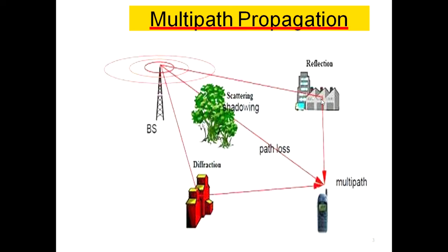One path may include reflection, another may introduce scattering or a shadowing effect, and another path will introduce diffraction. These modifications affect the incoming signal differently.